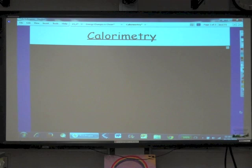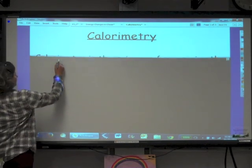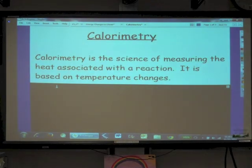Our topic is calorimetry. It's our first method to figure out how much energy is associated with a reaction. In previous problems we've been given the delta H for reactions and asked to do mathematical manipulations. But how do we find delta H? There are three different ways, and the first one is an experimental method called calorimetry. Calorimetry is the science of measuring the heat associated with a reaction, and it's based on temperature changes.